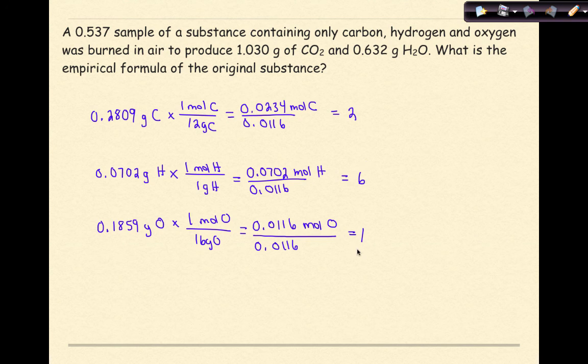Now what do these represent? These represent the subscripts of each of these elements in the empirical formula. So the empirical formula here would be C2H6O1, or more specifically, just C2H6O. That is my empirical formula. So these numbers right here, again, are subscripts. And these subscripts will go with each of these elements that we see up here. And therefore, you've answered your problem of what is the empirical formula of this particular substance.